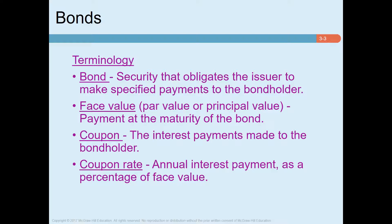Coupon bonds: bonds generally carry a specific interest payment called a coupon. For example, if a bond has a face value of $1,000 and its interest rate is 10%, then the coupon payment will be $100 per year. Coupon rate is the specific interest rate quoted on a bond when it is issued. For example, a bond issued with a coupon rate of 10% and a par value of $1,000 will pay 10% on $1,000 every year until maturity.